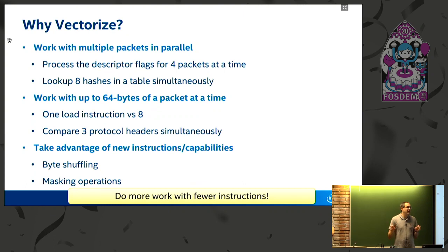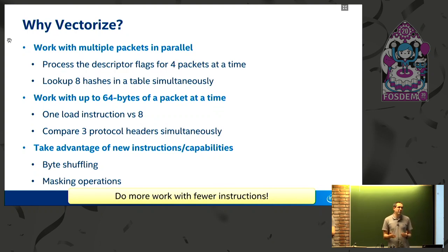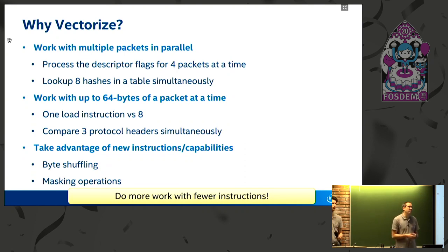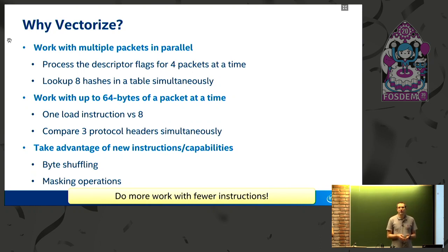Alternatively, instead of using SIMD as multiple data, we can work with larger block registers. So instead of working with eight bytes of data from a packet at a time, we could load and work on all 64 bytes of packet headers within one register — not multiple packets, but just more data from one packet. In that case, we could potentially save eight load instructions and just do one. We could work on three or four packet headers simultaneously rather than processing each field one at a time. And perhaps most interestingly, it opens up new possibilities — new ways of doing things — by taking advantage of the novel instructions that these vector instruction sets provide.